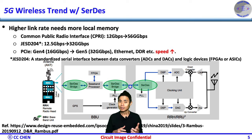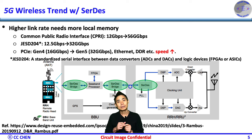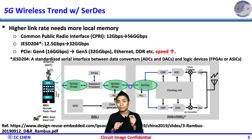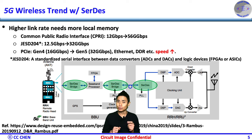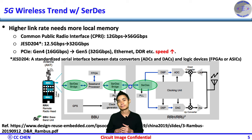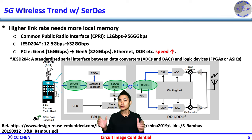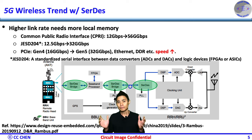Lots of digital signal processing would also need serdes for data exchange. Since the amount of data is increasing, we may need a higher data rate in every standard protocol. In SiPPI, the data rate requires 56 Gbps, up from 12 Gbps in the past. In JESD204 and PCIe, people already push the data rate up to 32 Gbps now.